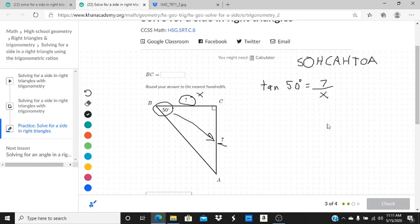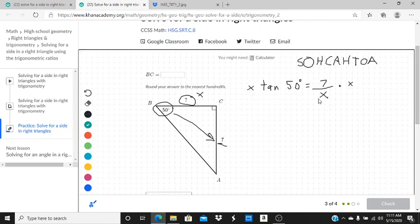Okay, so we want to solve for x. So I want to get x out of the denominator, so I'm going to multiply both sides by x. On the right-hand side of the equation, the x's will cancel. And I will get x times the tangent of 50 degrees equals 7.